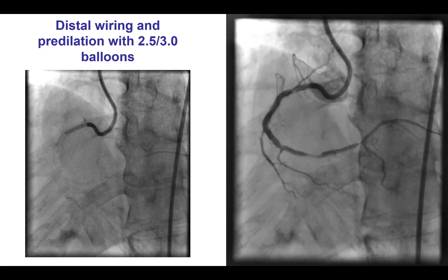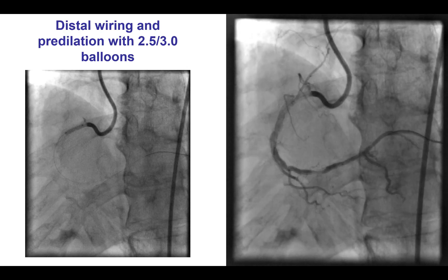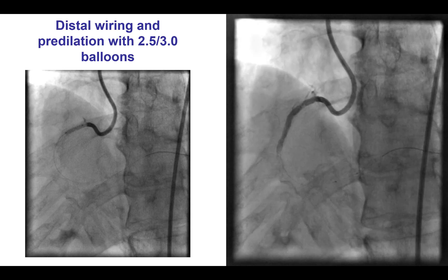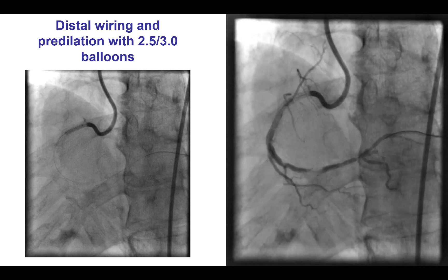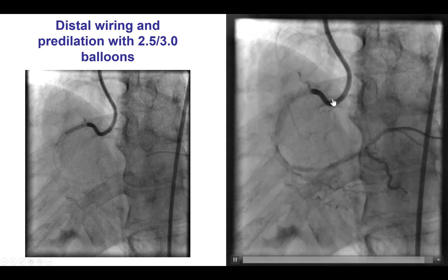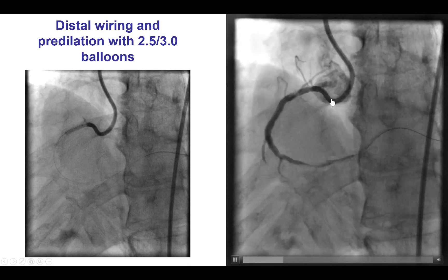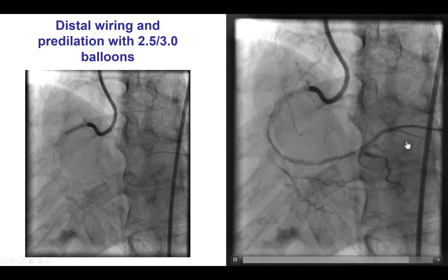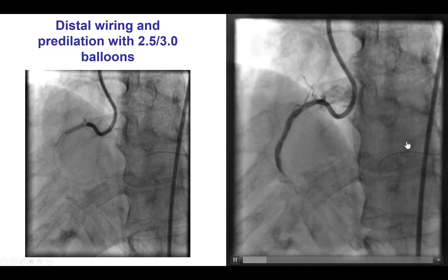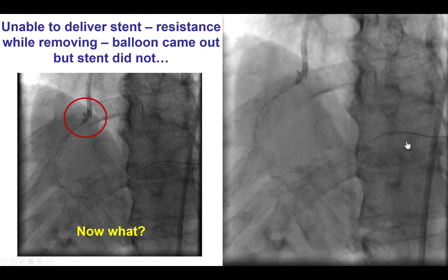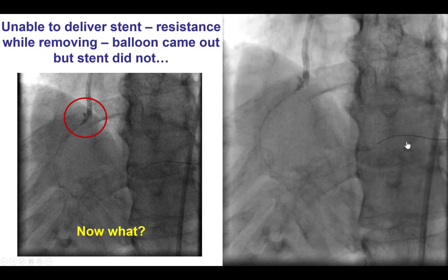The patient was not a candidate for coronary bypass graft surgery. To do this, we used the AL1 guide catheter that provides good support. We were able to wire easily with the workhorse guide wire and then performed pre-dilations of the distal and proximal right coronary artery lesions.